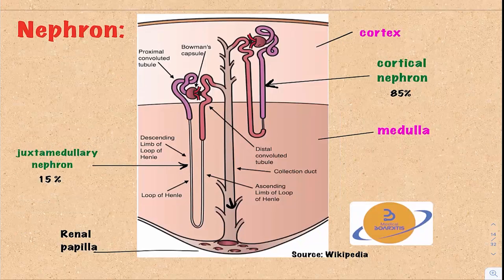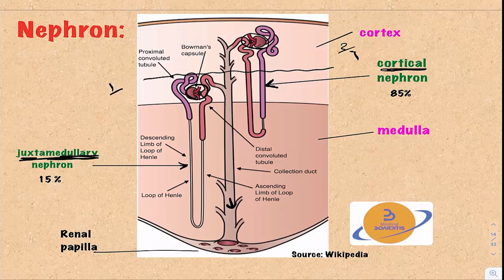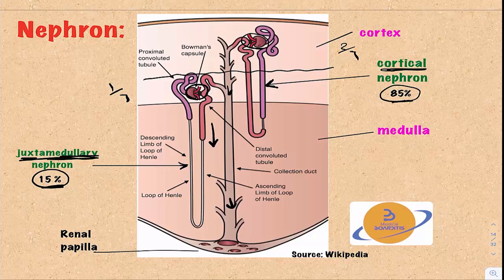Cortical nephrons have renal corpuscles in the outer two-thirds of the cortex and represent 85% of all nephrons. Juxtamedullary nephrons have renal corpuscles in the inner third of the cortex and represent 15% of nephrons; their loop of Henle extends more deeply into the medulla. All nephron tubules drain into collecting ducts, which drain into the renal papilla, then into the minor and major calyces, the renal pelvis, and finally into the ureter.